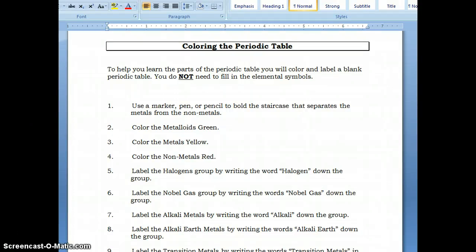So here we're going to start out our instructions on coloring the periodic table. And the objective here is to help you learn the parts of the periodic table. So we're going to color and label a blank version. You're not going to use the EOC version. You're going to flip it over and you do not need to fill in your elemental symbols.